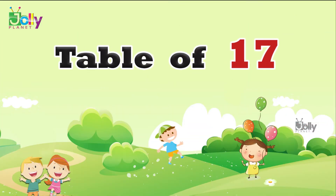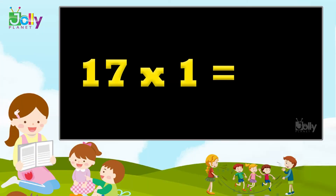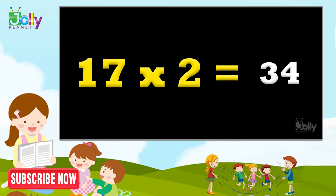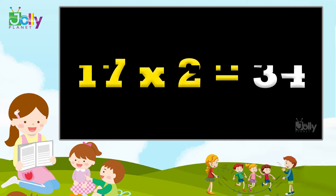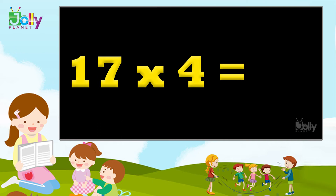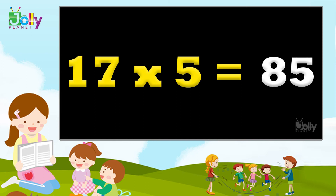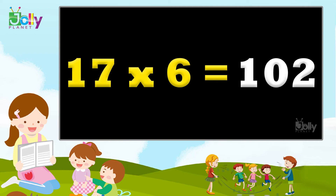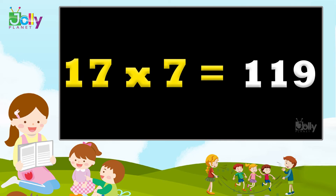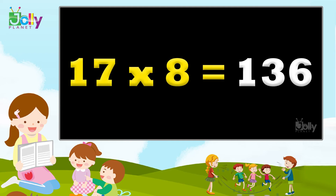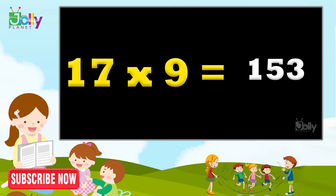Table of 17. 17 1s are 17. 17 2s are 34. 17 3s are 51. 17 4s are 68. 17 5s are 85. 17 6s are 102. 17 7s are 119. 17 8s are 136. 17 9s are 153.